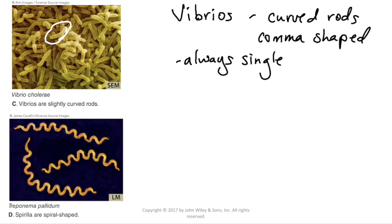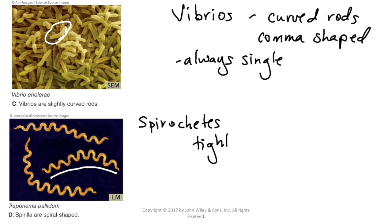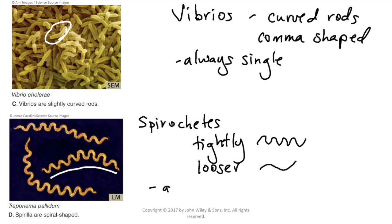My personal favorite are the really spirally ones. The general term for those is the spirochetes. We have a picture of Treponema pallidum, and you can see it has multiple curves in a single bacterium. Those that are tightly coiled are like little corkscrew bacteria; others are more loosely curved. Like vibrios, spirochetes are always a single bacterium — they never really grow in groups.